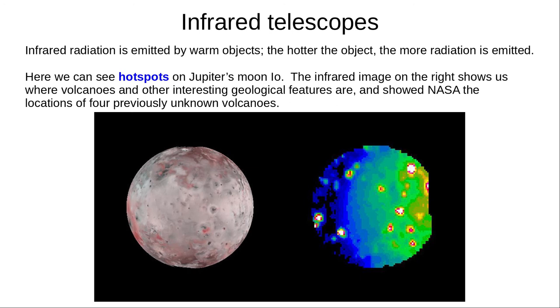And infrared radiation is used to locate hotspots on moons, such as Jupiter's moon Io. This shows us volcanoes and other interesting geological features. And this image helped NASA identify four previously unknown volcanoes.